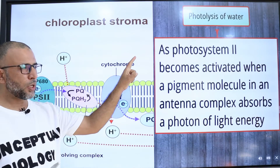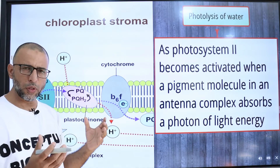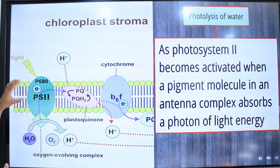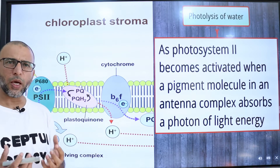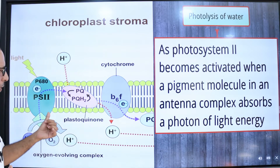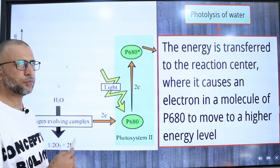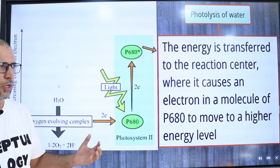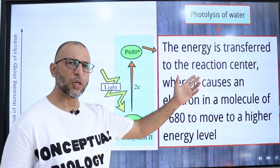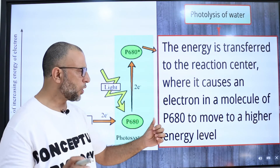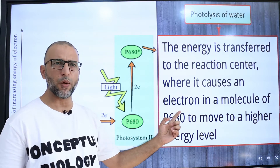Photosystem I and photosystem II are pigment molecules along with electron transport carriers, and they are embedded in thylakoid membranes. Photosystem II becomes activated when a pigment molecule in the antenna complex absorbs a photon of light. When pigment molecules absorb a photon, the energy is transferred to the reaction center, where a chlorophyll A molecule known as P680 is present.